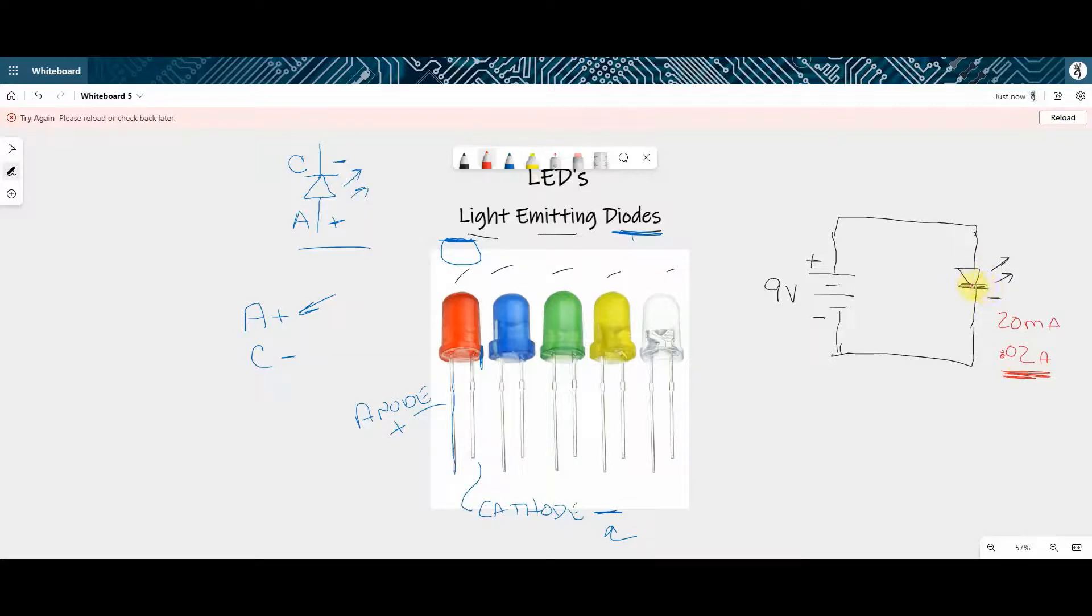But we want to protect this LED and the way we protect that LED is by putting a resistor in the circuit. Now remember this resistor is going to restrict or limit the current traveling through this entire loop. So we can put the resistor here, we can put it here, doesn't matter. I always like putting my limiting resistors before my LED. So that's called a limiting resistor.